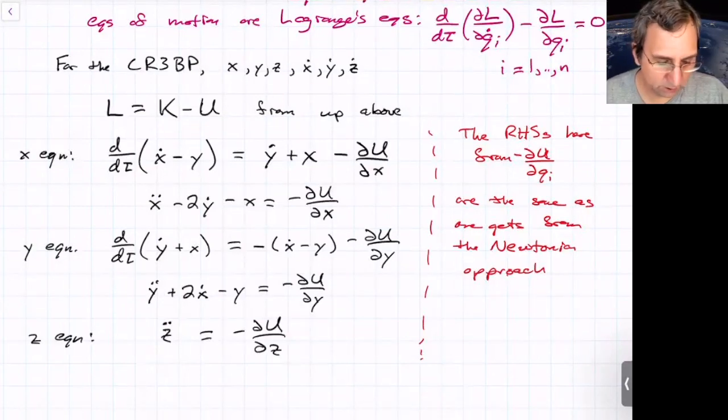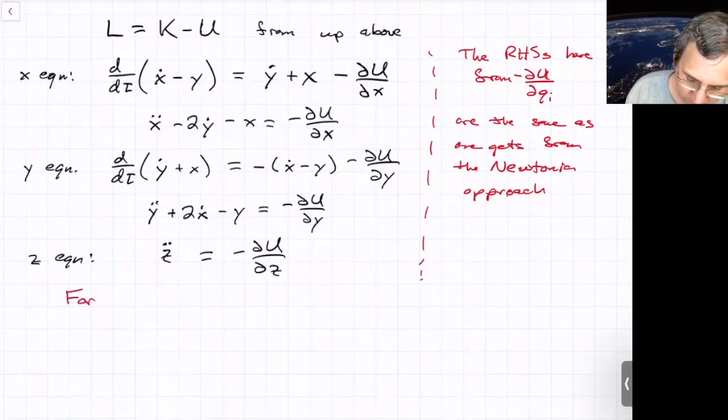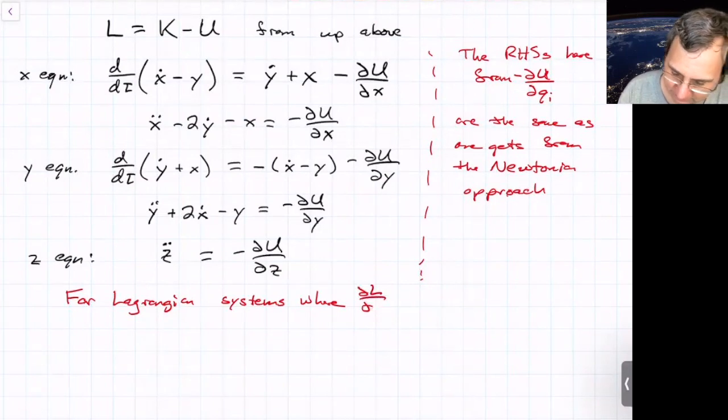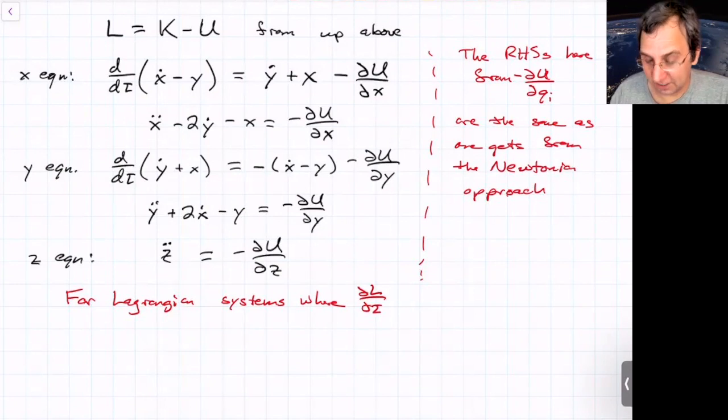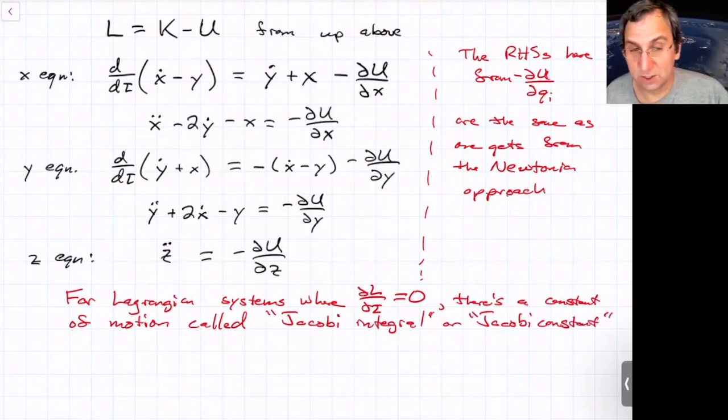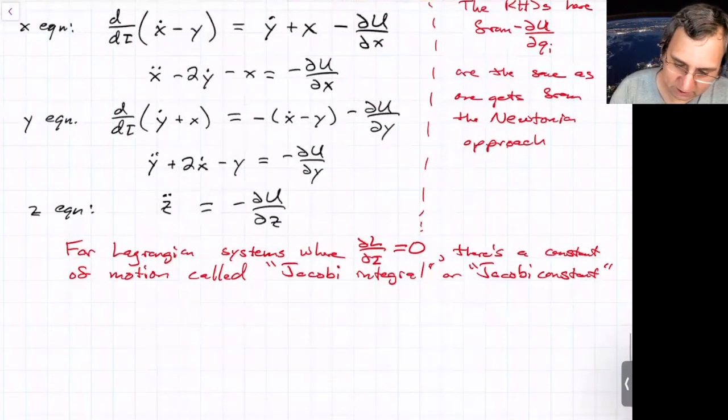There's also something for Lagrangian systems where there's a constant of motion. And this ends up becoming important for Lagrangian systems where partial L, partial t, or I guess in this case, tau. Where the Lagrangian doesn't explicitly depend on time, there's a constant of motion. And this is true for all Lagrangian systems that have this, but it's called the Jacobi integral or Jacobi constant. Where this gets used the most is celestial mechanics, three-body problem. But this is true for any Lagrangian system.